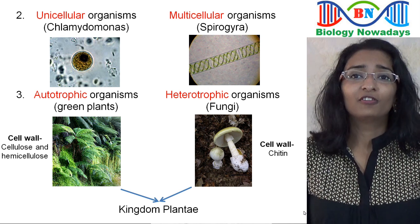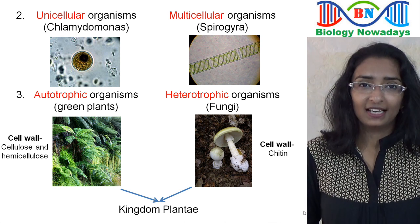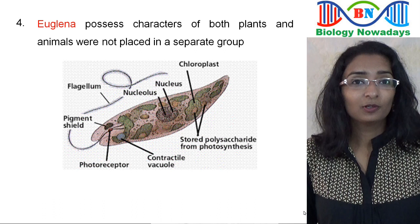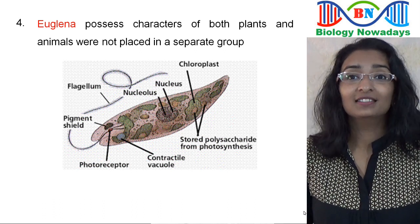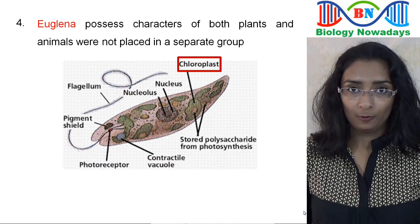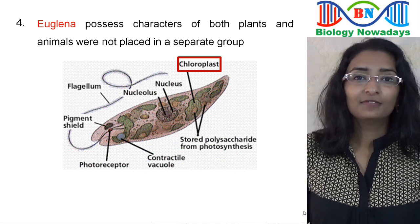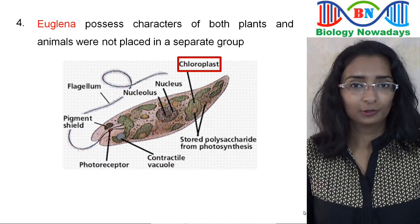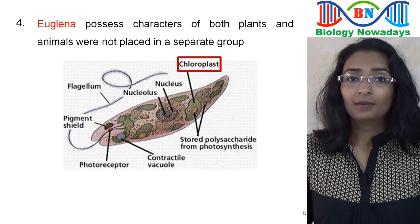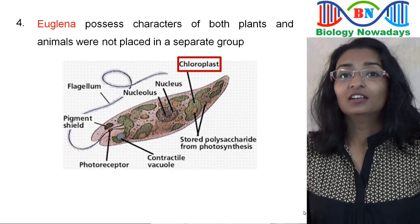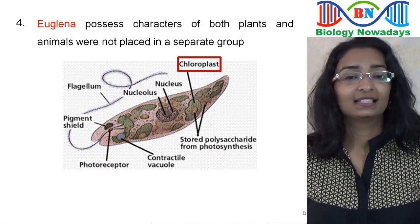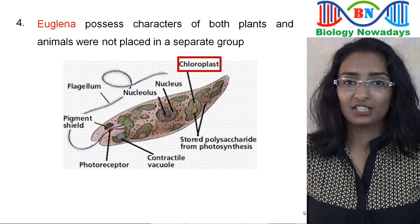Another disadvantage of Linnaeus's classification was that some protozoans like Euglena possess characters of both plants and animals. Euglena has chlorophyll in its chloroplasts and in the presence of sunlight can prepare its own food. But in the absence of light, it becomes heterotrophic by absorbing nutrients from the surroundings. Euglena was not classified as a separate group in Linnaeus's classification system.